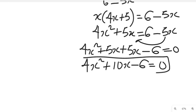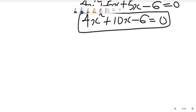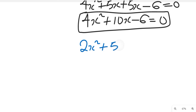This is a quadratic equation. Now to simplify that equation we are going to divide through by 2. This will become 2x squared plus 5x minus 3 equals 0.